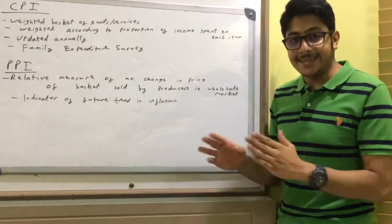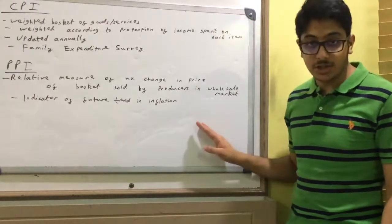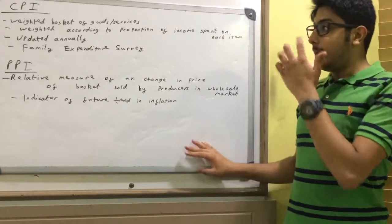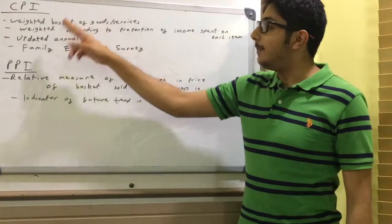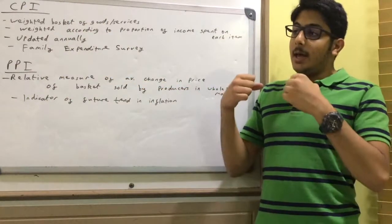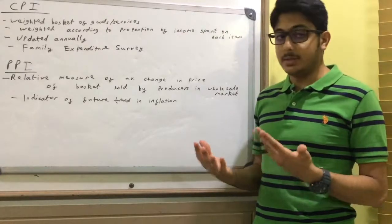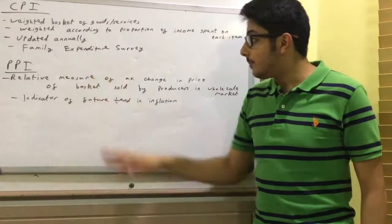The main difference between CPI and PPI is the Consumer Price Index measures how much consumers spend on goods and services, whereas the Producer Price Index measures how much producers receive - so producers and manufacturers.